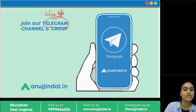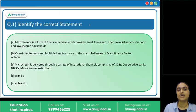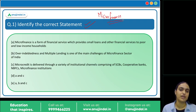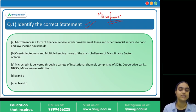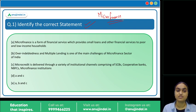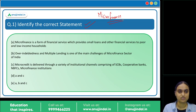Let's start with the first question: identify the correct statement. We have a few statements related to the microfinance sector in India. RBI has recently come up with a new set of directions related to microfinance. The first three questions are based on these directions.